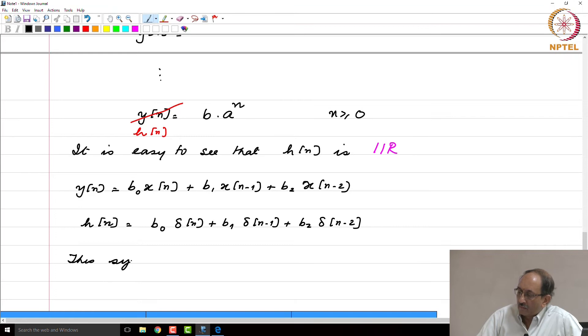This system is clearly FIR because the impulse response consists of three samples: starting at n = 0 it is b₀, at n = 1 it is b₁, at n = 2 it is b₂. This is a system whose impulse response is of finite duration. This is an FIR system.